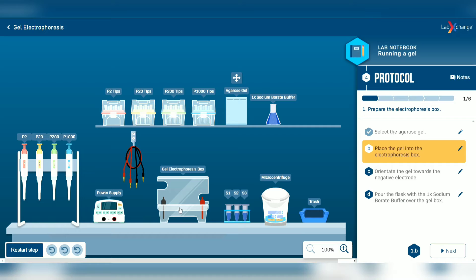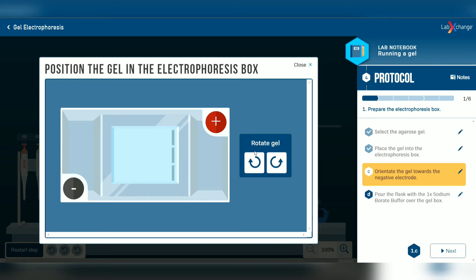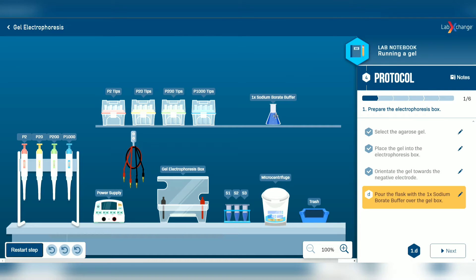First of all, open the gel electrophoresis box and select the agarose gel and place it into the electrophoresis box. Next, orientate the gel towards the negative electrode and pour the buffer with one X sodium borate buffer over the gel box. Close the gel electrophoresis box.